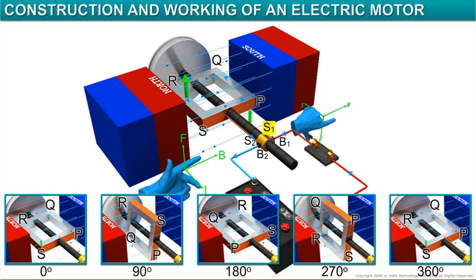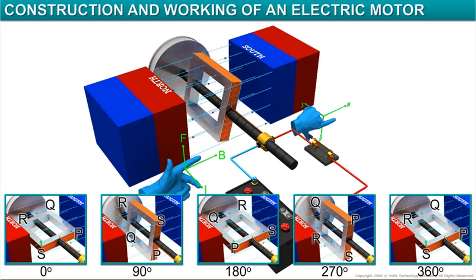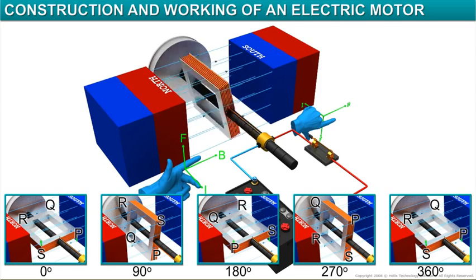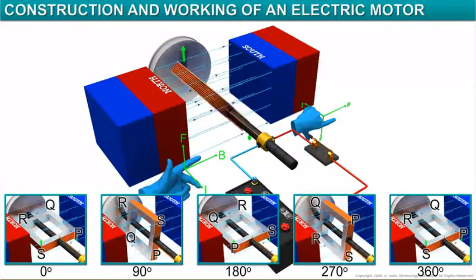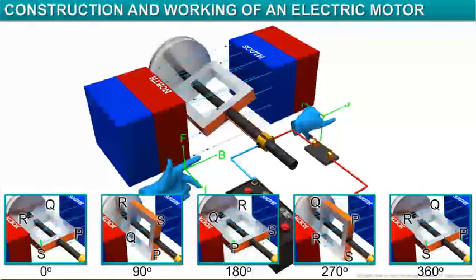the split ring S1 connects PQ once again to carbon brush B1. Similarly, S2 connects RS to B2. Thus, as long as the coil is connected to a battery, it continues to rotate and convert electrical energy into mechanical energy.